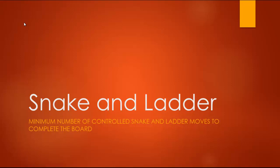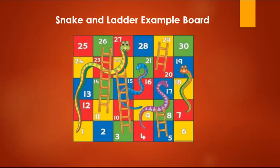Let's take an example of this particular board. In this board, we have 30 cells going from 1 to 30. Suppose I'm at cell number 1 and I output 2 on the dice. I move 2 steps, get a ladder, and come up to cell 22.